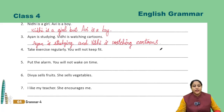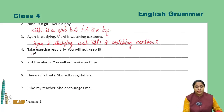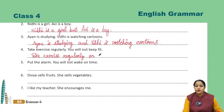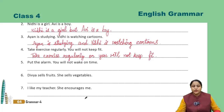Next sentence: Take exercise regularly, you will not keep fit. Ya toh exercise regularly karo, nahi toh you will not keep fit. Ishi tarah se baaki ke parts aap khud karenge.